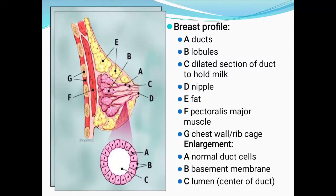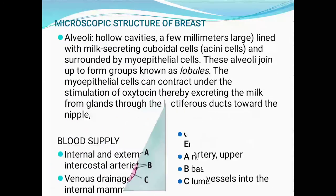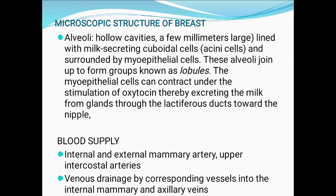Breast profile: A shows the ducts, B lobules, C dilated section of ducts to hold milk, D nipple, E fat, F pectoralis major muscles, G chest wall ribcage. Also shown: A — normal duct cells, B — basement membrane, and C — lumen, the center of the ducts.